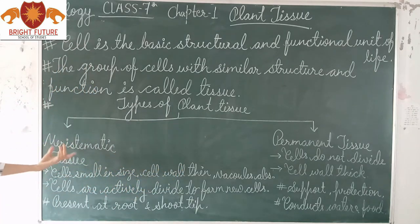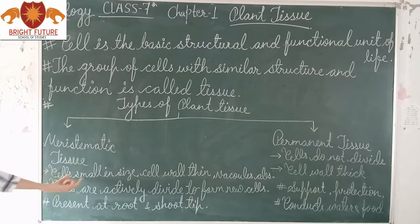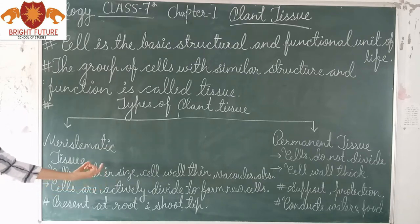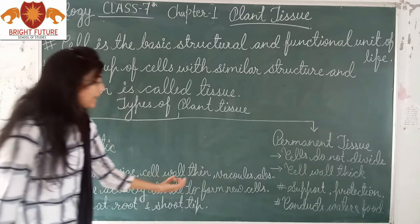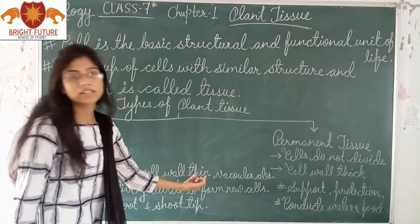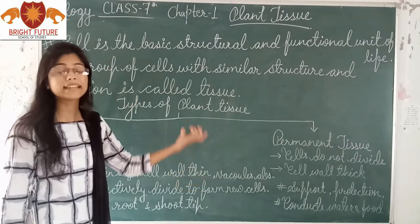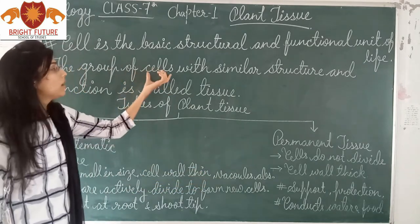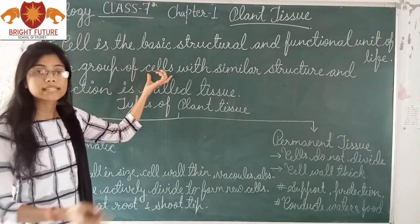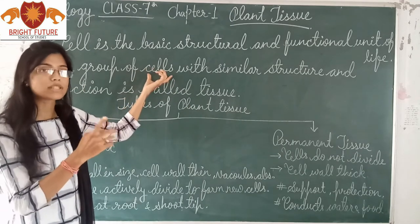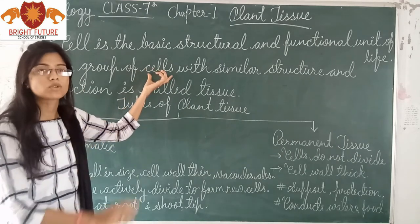The characters of meristematic tissue: cells are small in size. Inside the plant, the cells are embedded within thin cell walls.